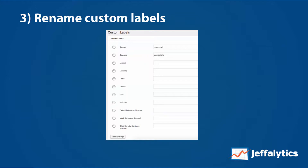Number three: you can rename the custom labels. So instead of calling it a course, in some cases we call them jumpstarts. In agency jumpstart, for example, you're not really taking a course — you're jumpstarting a different part of your business. So we change the language, and everywhere on the site it mentions jumpstarts instead of courses. We can rename it however we want, and it fixes everything downstream automatically within the learning management system.